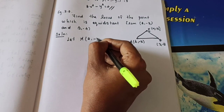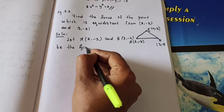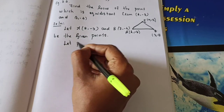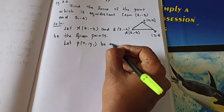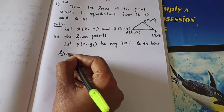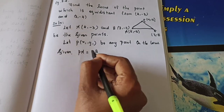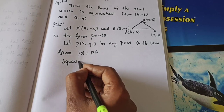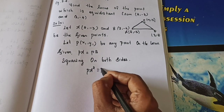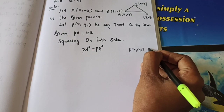The given points are A(2, −3) and B(3, −4). Let P(x₁, y₁) be any point on the locus. Given that both are equidistant, PA = PB. Squaring on both sides: PA² = PB². Now use the distance formula. P is (x₁, y₁), A is (2, −3) — consider as x₁, y₁ and x₂, y₂. Then PB with B(3, −4). Both orderings are correct since we are squaring.